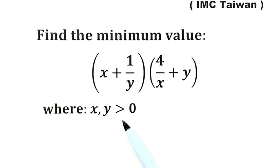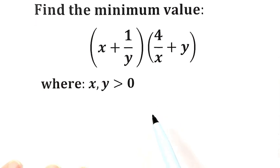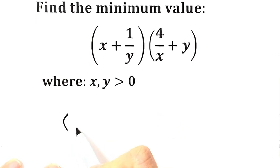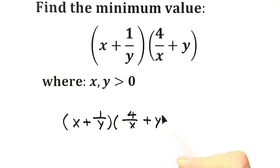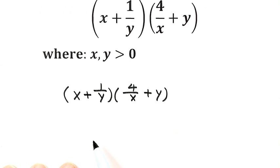Now let's see how to solve it. So we can start from here: x plus 1 over y times 4 over x plus y. First, let's expand the product.